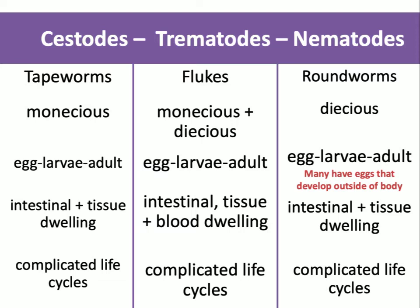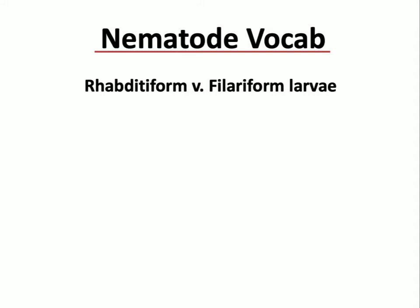There are two new forms of larvae specific to the nematodes: the rhabditiform larvae and the filariform larvae. Rhabditiform larvae are a very actively feeding, moving stage. Filariform larvae are usually the infective stages. It's kind of like trophs and cysts — where you have that actively feeding troph causing damage, and then the cyst preparing to leave the body, go into the environment, and likely be the infective stage later.